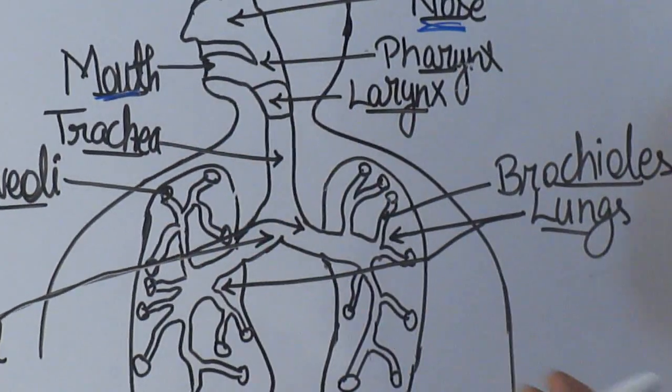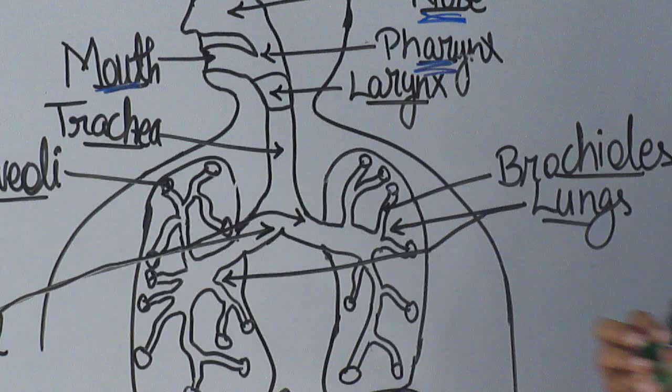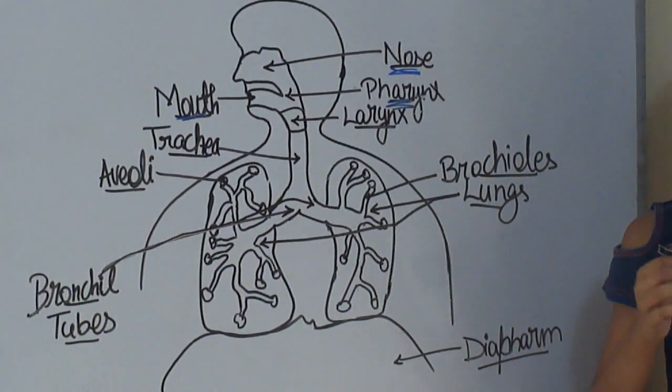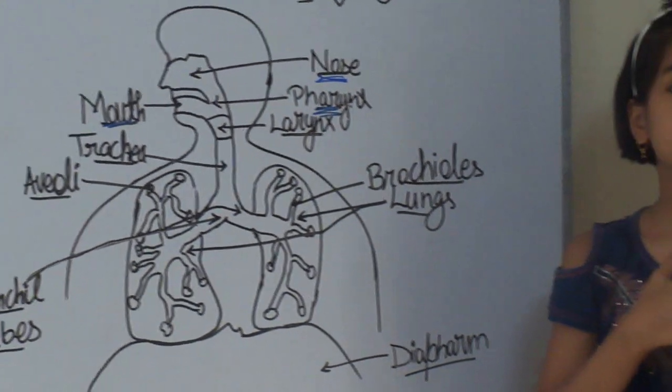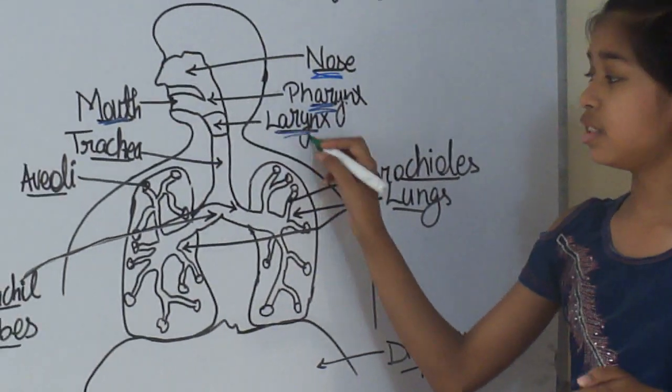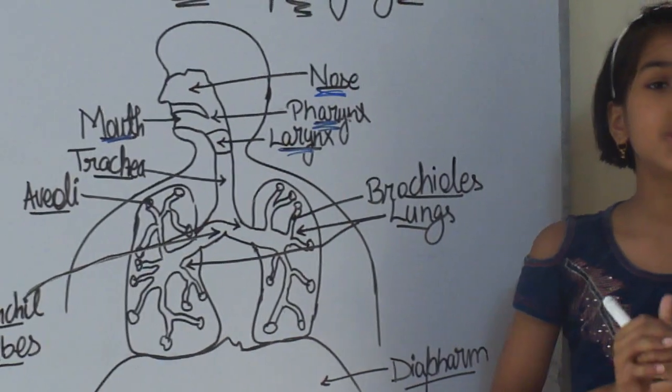Now, about the pharynx. What's the pharynx? This is basically our throat. And about the larynx, it is a sound box which creates sound.